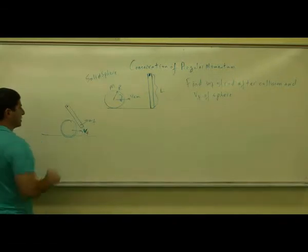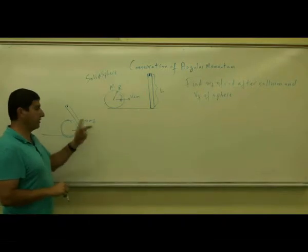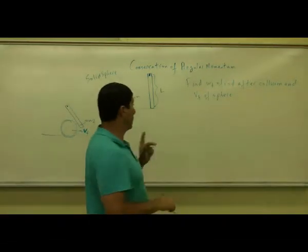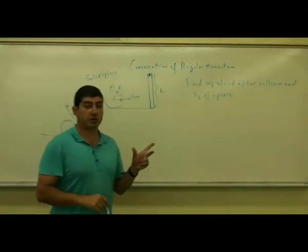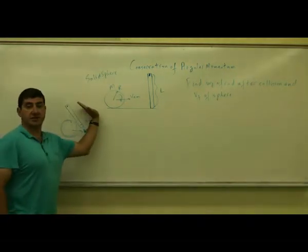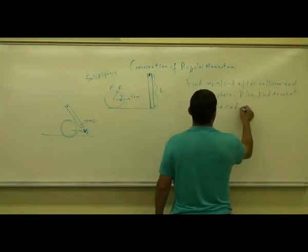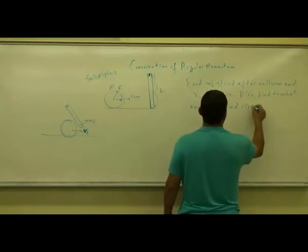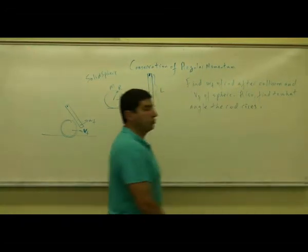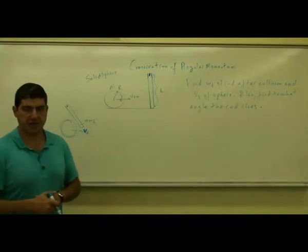So I want to know: what's the final velocity of the ball after the collision, what's the omega final of the rod after the collision, and I would also like to know to what height the rod rises, to what angle it rises. So what quantities are conserved in this case?